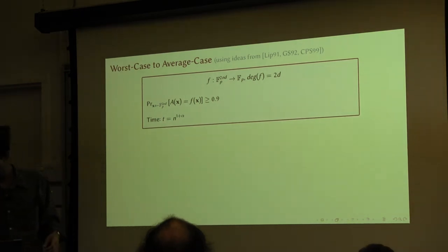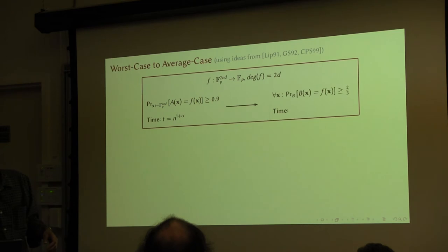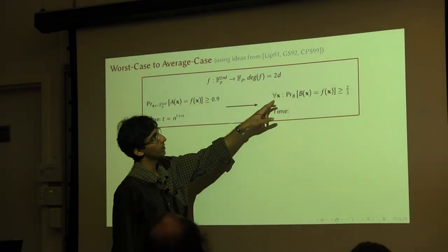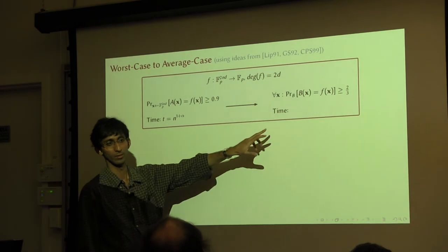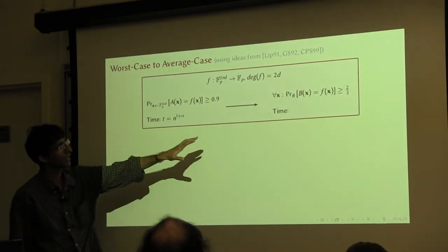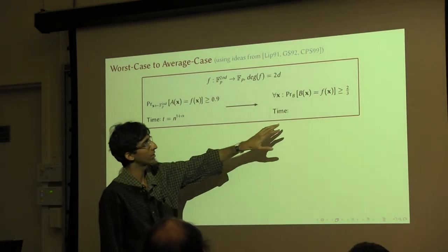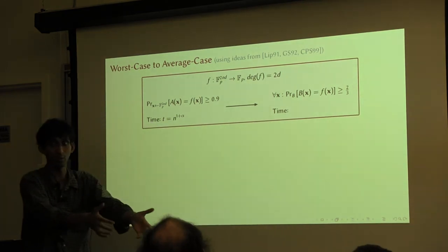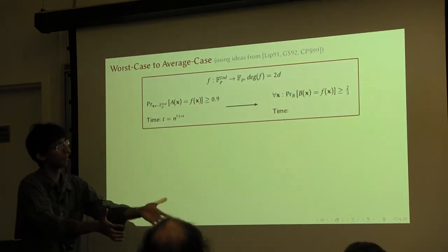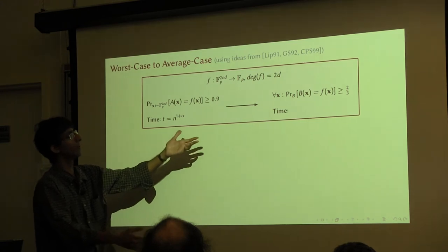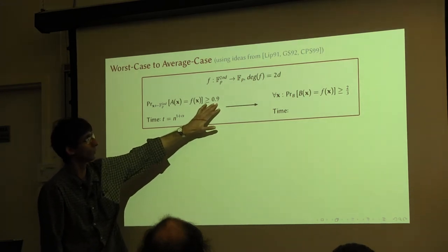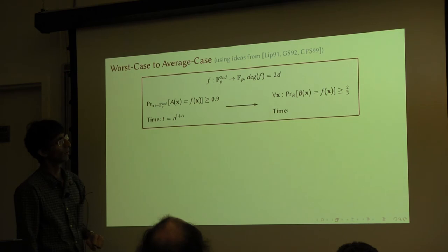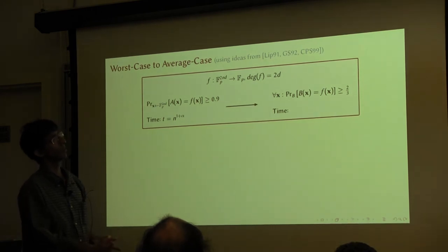Take any algorithm like this which runs in some bounded time. We are going to construct an algorithm B which will work on all inputs with certain probability. And like I said, if you can compute f on all inputs, then you can decide orthogonal vectors by simply evaluating it on the instance you have. So if we can show this, it would prove a weaker version of the theorem. How are we going to do this? Let me describe how B works.